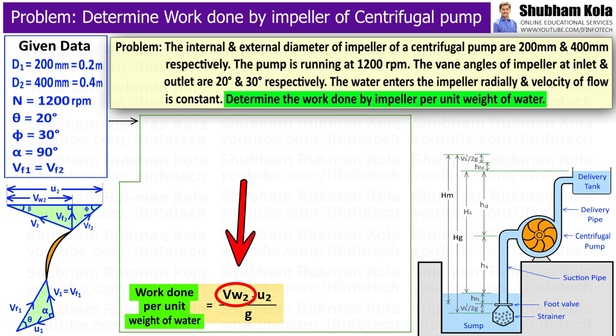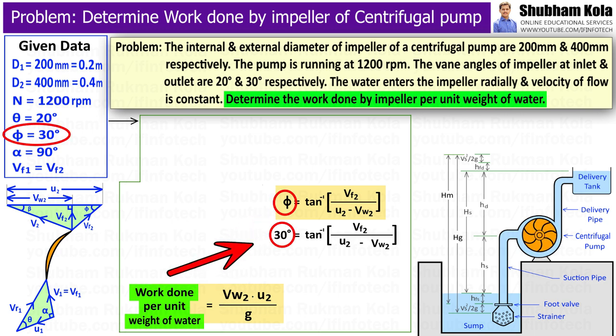Therefore, velocity of whirl at outlet, that is Vw2, we can calculate from trigonometric ratio of tan phi, because blade angle at outlet, that is phi, is given in problem as 30 degree.